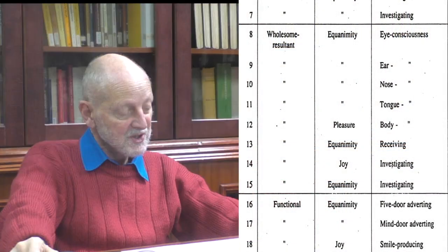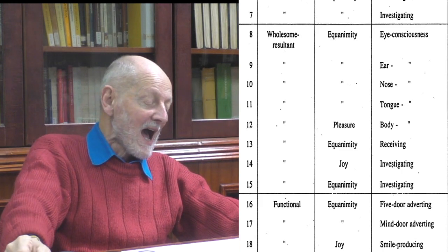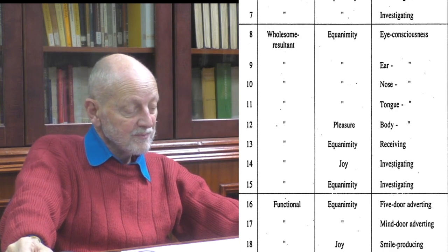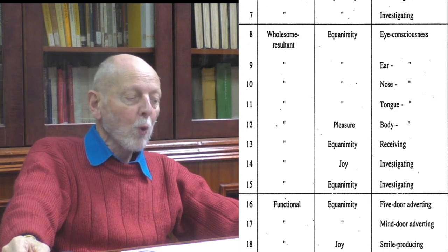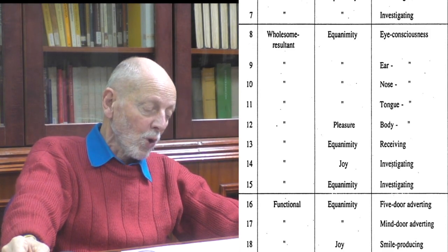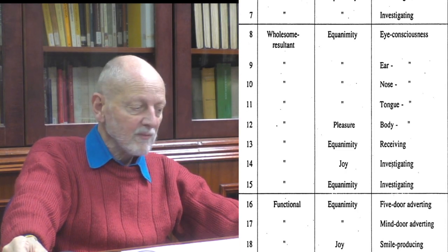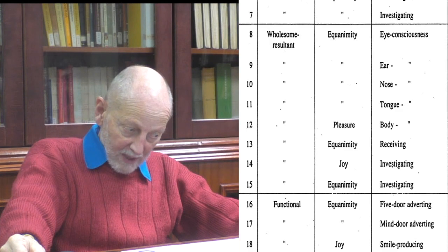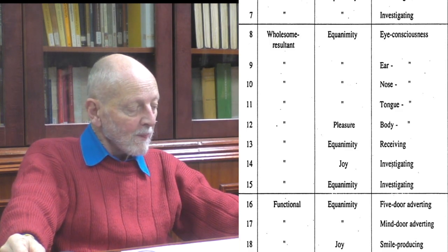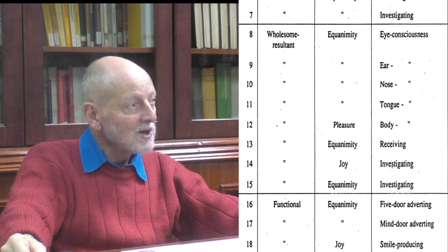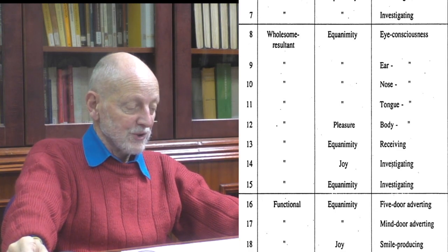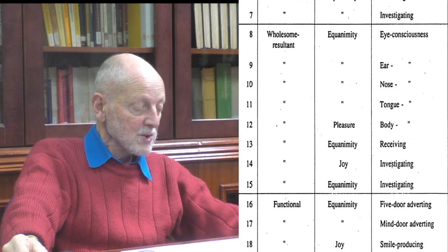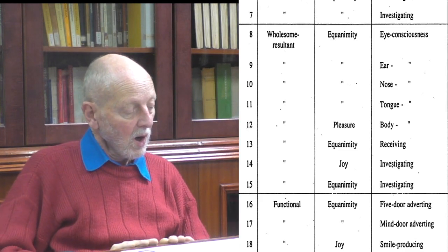If we go on now to numbers 16 and 17, we have thought moment number 4, which is the adverting consciousness — turning the mind towards the sense door which has been stimulated. It says five-door adverting, which can be either eye, ear, nose, tongue or body. Or if it's something arising in the mind door, then it's a mind-door adverting. These are also to be found on the 17 thought moments.